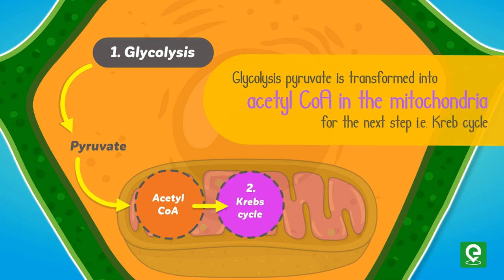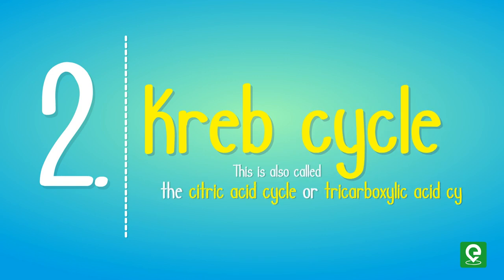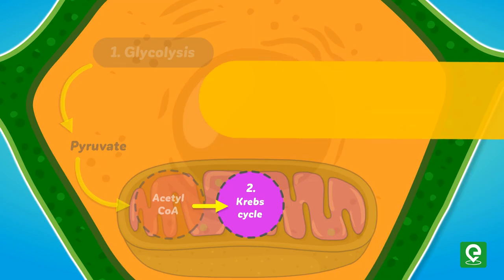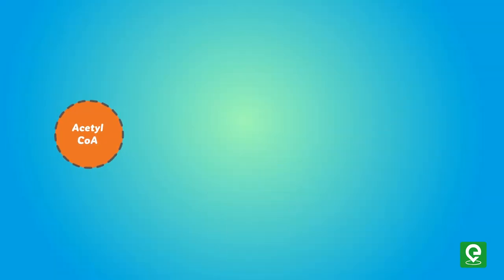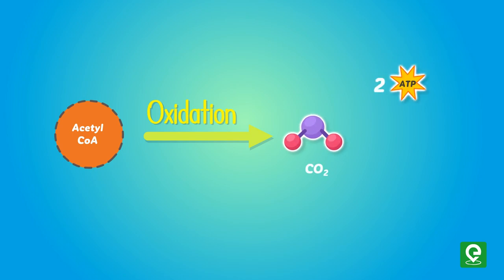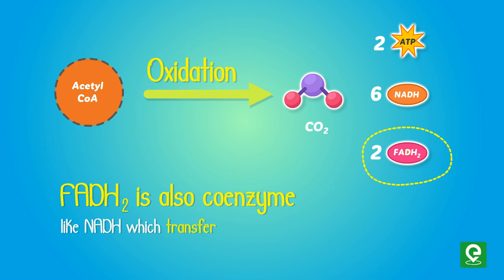The second step is the Krebs cycle, also called the citric acid cycle or tricarboxylic acid cycle. This step requires oxygen and takes place in the mitochondria. In this step, acetyl coenzyme A undergoes oxidation and produces carbon dioxide, 2 ATP, 6 NADH, and 2 FADH2. FADH2 is also a coenzyme like NADH, which transfers electrons during phosphorylation.